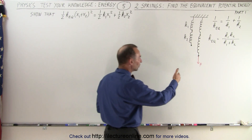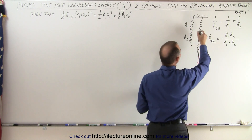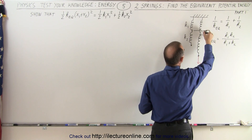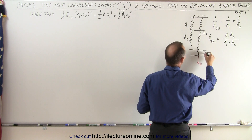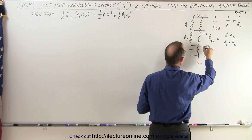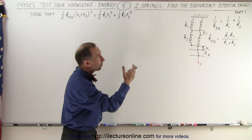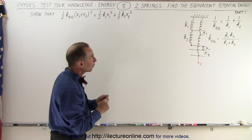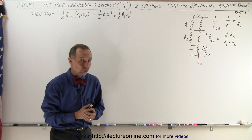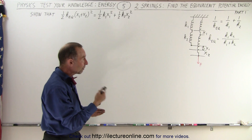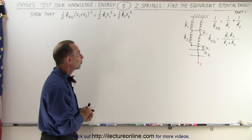If we apply a force to it we'll elongate both springs, so the elongation for the first spring would be x1 and the elongation of the second spring would be x2. We have the equivalent spring constant which can be written as 1 over k_equivalent equals 1 over k1 plus 1 over k2, or the equivalent spring constant is the product over the sum of the individual spring constants.